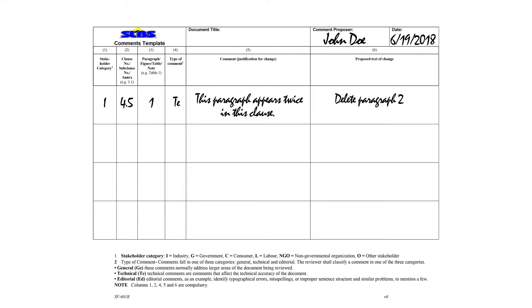This is how you complete a comment template in a nutshell. We will show you an example of a completed row where the stakeholder category is recorded, the clause number that the comment is referring to is recorded, the paragraph, figure, table or note, the type of comment, the justification or the actual comments that you would like to make on the specific paragraph or clause in the standard, and the proposed text of change.